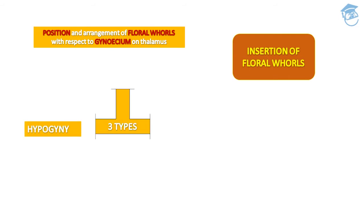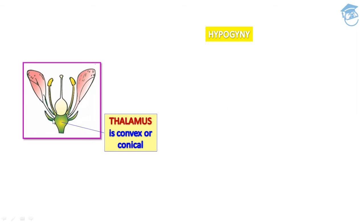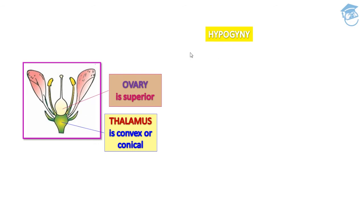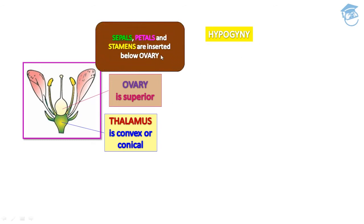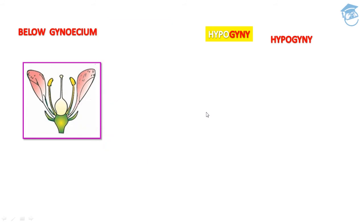The position and arrangement of floral whorls with respect to gynoecium on the thalamus defines three basic types: hypogyny, perigyny, and epigyny. In hypogyny, the thalamus is convex or conical; the ovary is superior because it is situated just above the thalamus. Sepal, petals, and stamens are inserted below the ovary — hence the name hypogyny ('hypo' means below, 'gyny' means gynoecium). Example: Hibiscus.